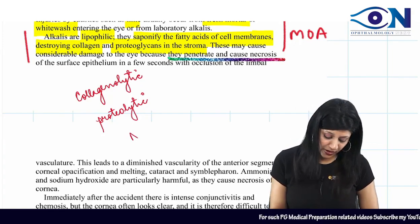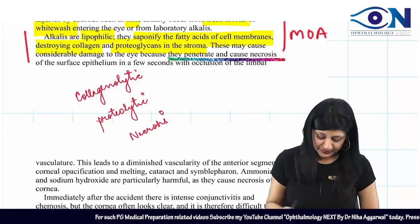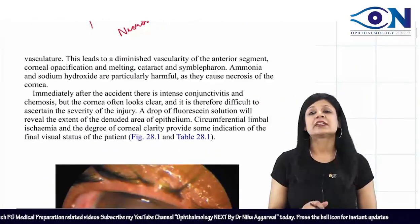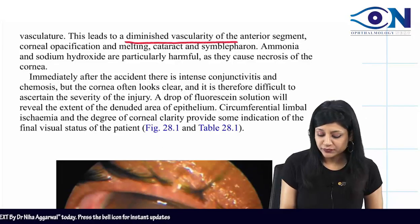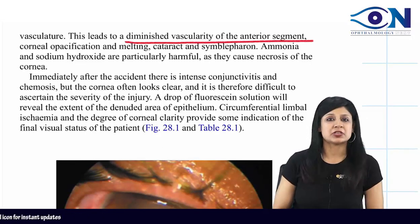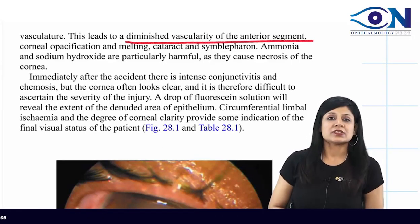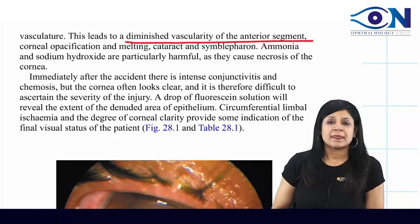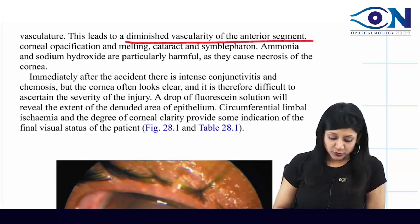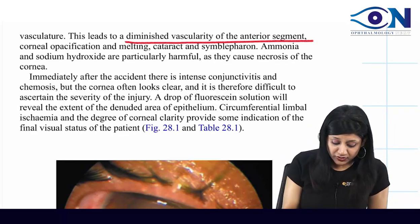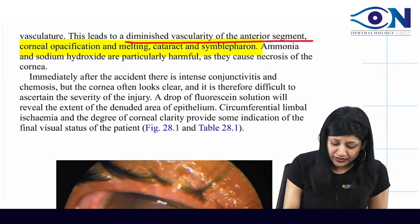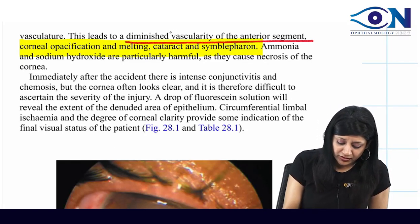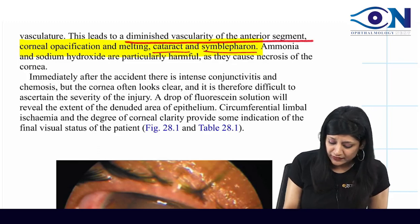An important concept here is necrosis or cell death. Necrosis causes diminution of vascularity of the anterior segment — no blood supply means dead tissue. This leads to corneal opacification, corneal melting, cataract formation, and symblephron.